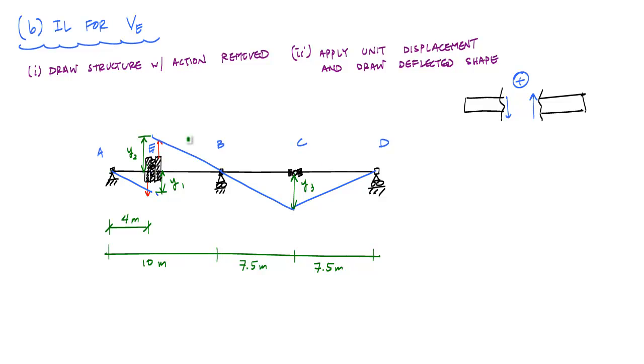And the thing to note here in this deflected shape diagram is that this slope and this slope are the same, which makes this slope the same too. And that means this angle and this angle and this angle, they're also the same. So this is theta, theta, theta.